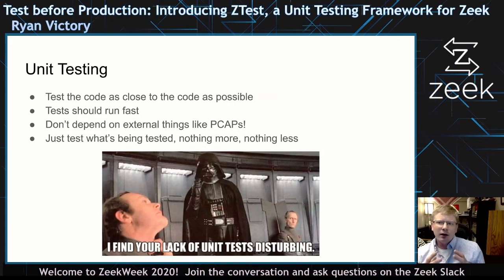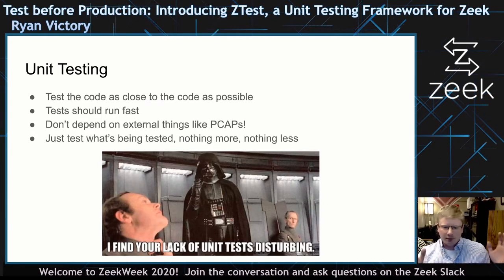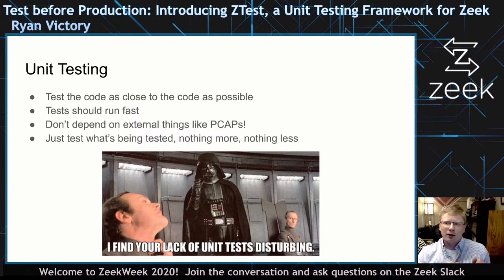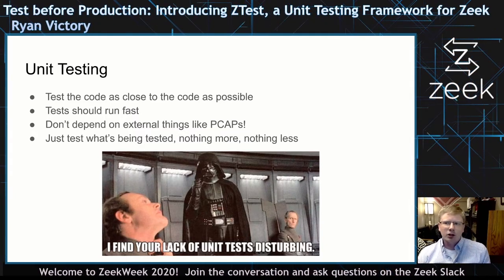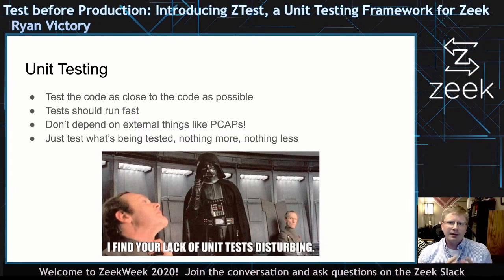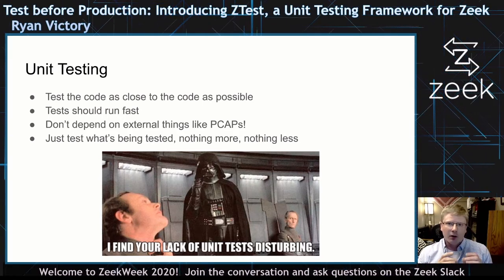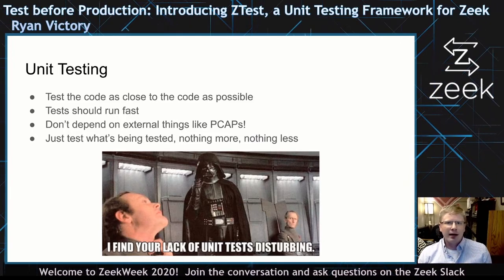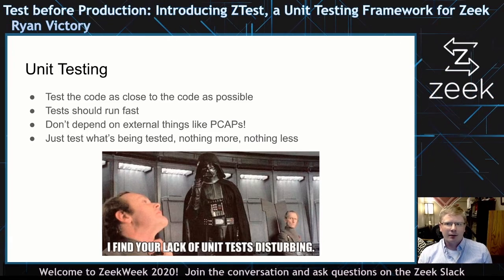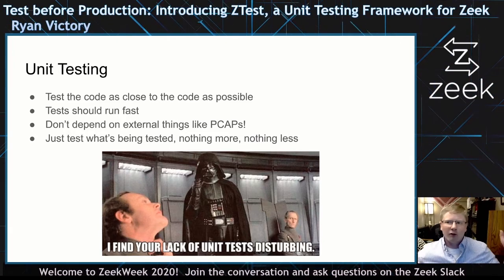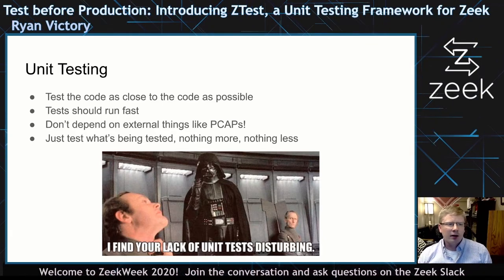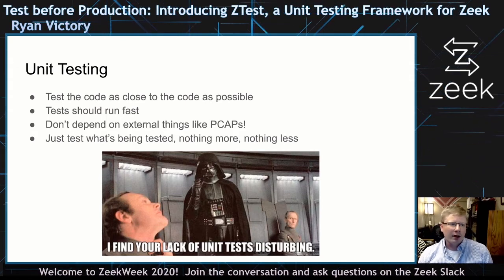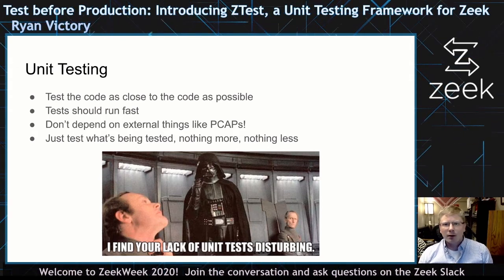Let's focus on unit testing, because I think this is where we can solve a lot of problems. Unit tests should run very fast. The idea is that they test very small, independent parts of the code. If I want to check if a change I've made to a file affects any of my tests, I can run all of them and they should finish in seconds. They shouldn't depend on external things like PCAP files — we're just testing what we need to test, nothing more, nothing less.